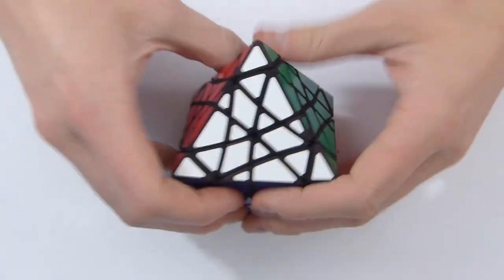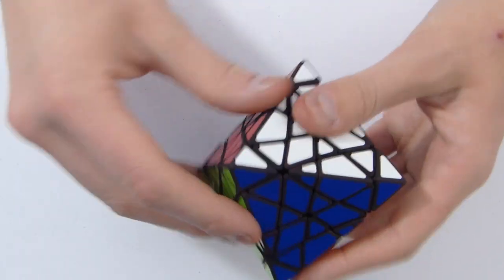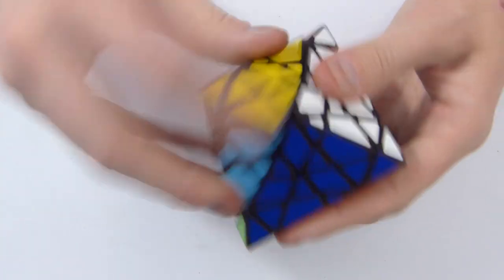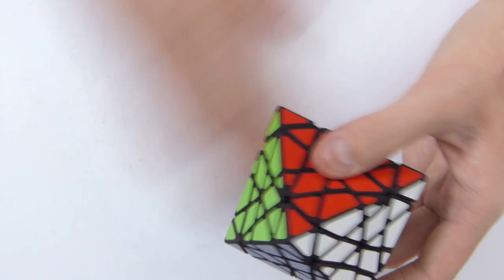And here it is assembled, and as you can see, the parts are much tighter than they were before. So yeah, now you can turn the puzzle, and it is a fully functional octahedron Starminx. So this is how it works.